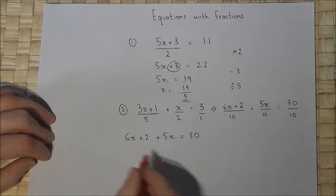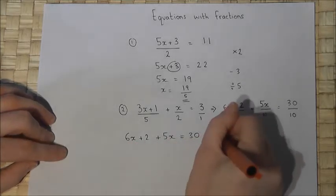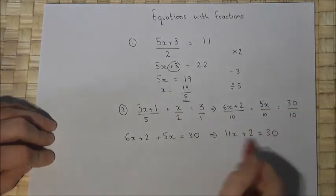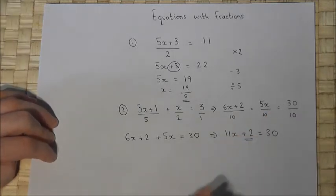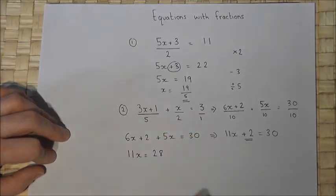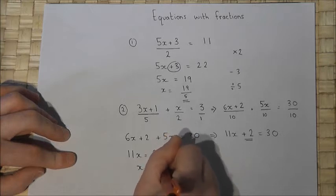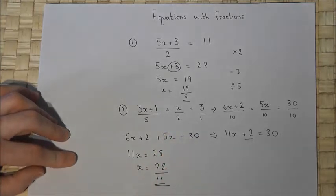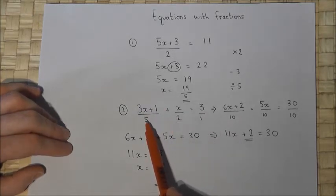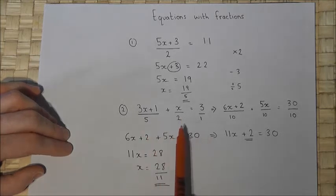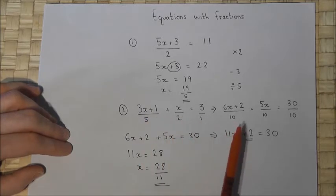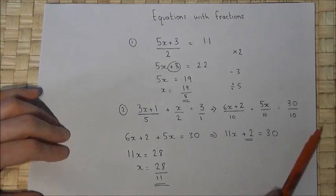The equation becomes 6x plus 2 plus 5x equals 30. Simplifying: 6x plus 5x equals 11x, so 11x plus 2 equals 30. There's a plus 2 so I take away 2 from both sides, giving 11x equals 28, and then x equals 28 over 11. When we have multiple fractions, the best method is to write all fractions over the same lowest common multiple — in this case 10 — then cancel off and solve as normal.